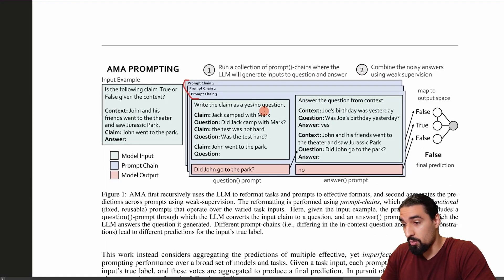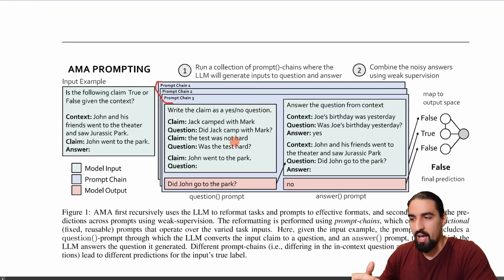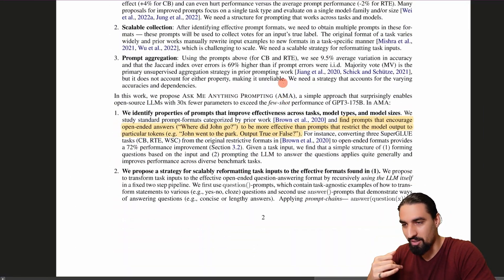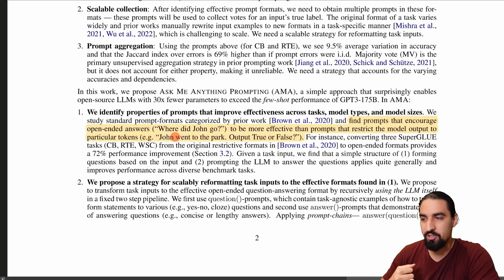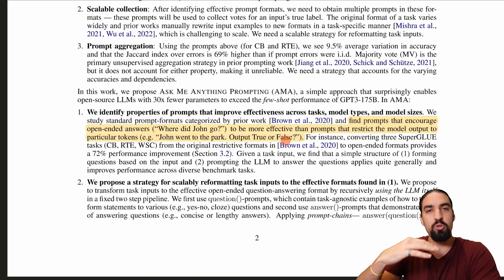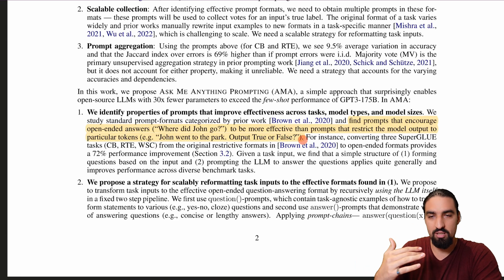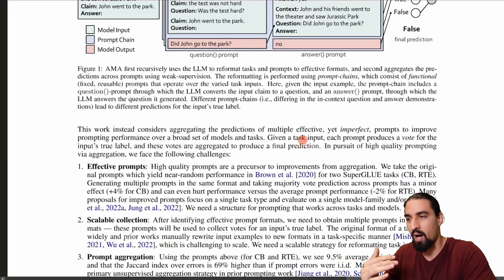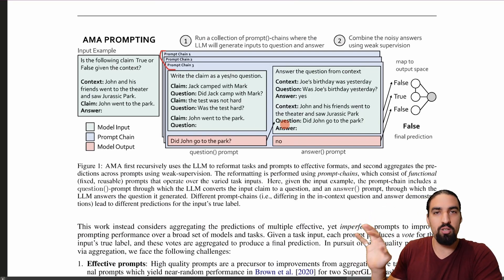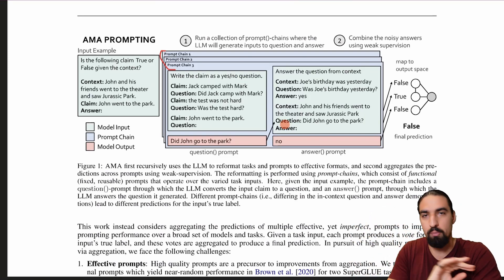So once we have those chains, let's see what's the idea. The idea is, because of their finding, so they find that the prompts that encourage open ended answers, where did John go to be more effective than prompts that restrict the model output to particular tokens. For example, John went to the park, output true or false. This is more restrictive as opposed to being more open ended. And because of this realization, they try and reformulate by this pipeline, the input task into this more of a open ended Q&A format. That's the idea.